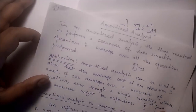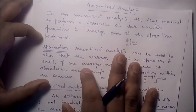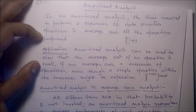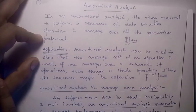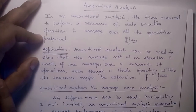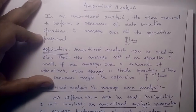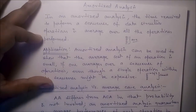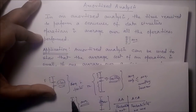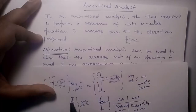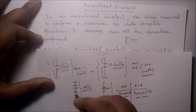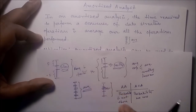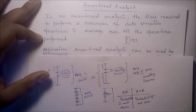In amortized analysis, the time required to perform a sequence of data structure operations is averaged over all the operations performed. Practically, in amortized analysis we take the average — the average complexity of all the steps of a particular algorithm. That is nothing but the amortized analysis.